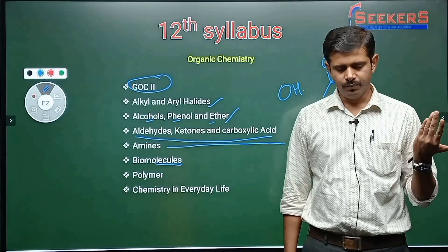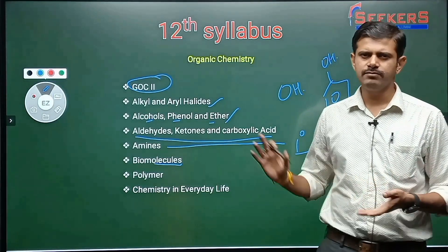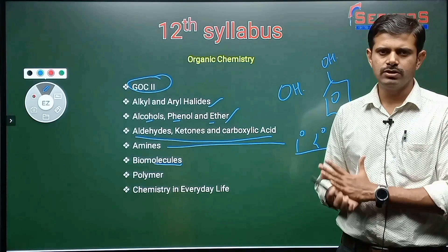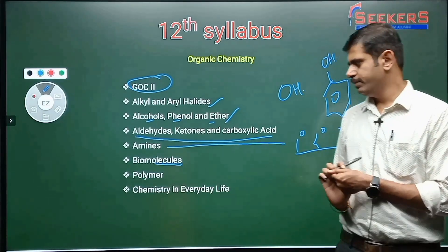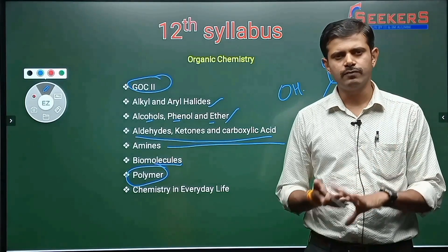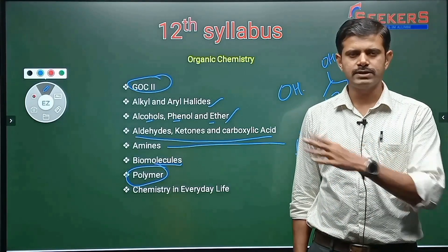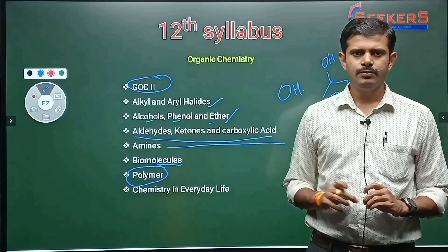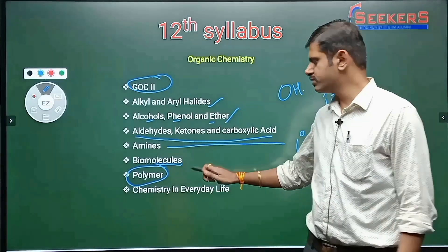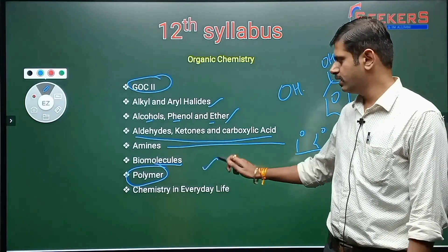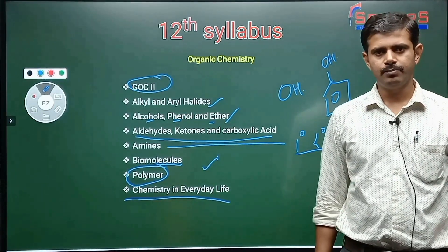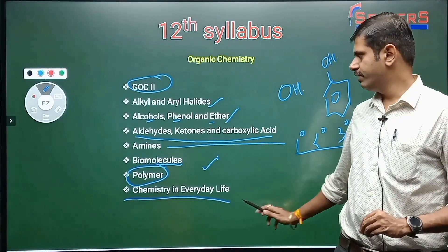Then we'll move to amines — primary, secondary, and tertiary amines. Then biomolecules, which also appear in biology but chemistry covers additional reactions not in biology. Polymers is an easy topic — every year one very easy question comes, for example: neoprene, Buna, polythene, or Teflon — what is its monomer? Such a question takes hardly 10 seconds. Finally, chemistry in everyday life covers medicines and their effects.